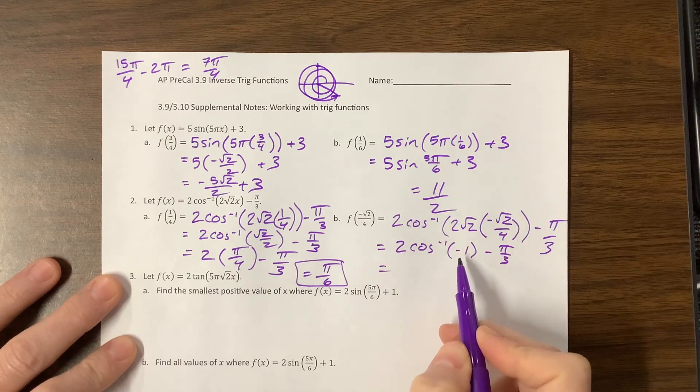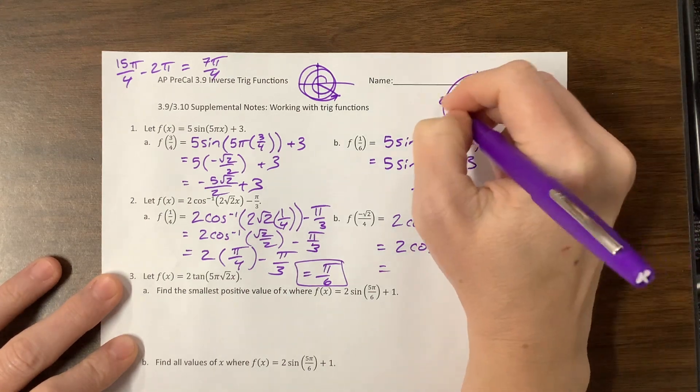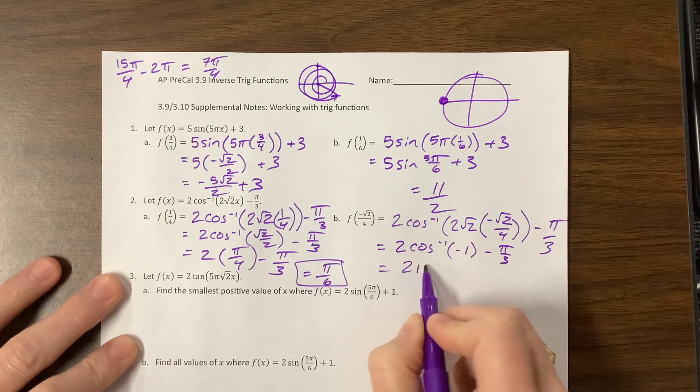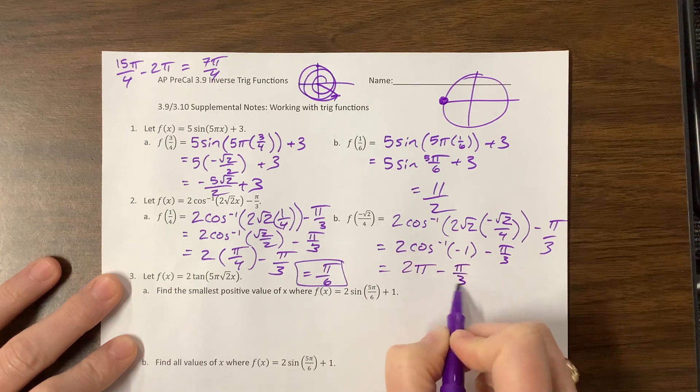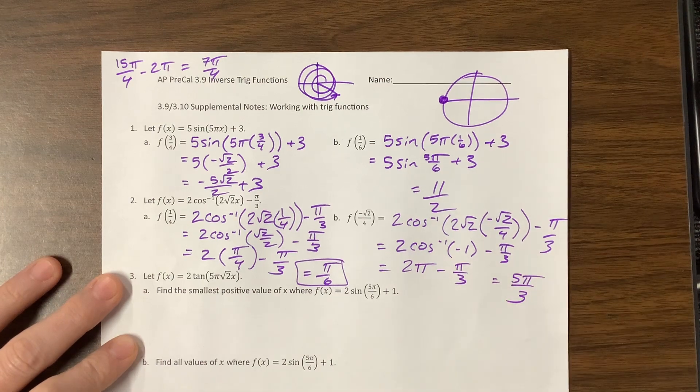Inverse cosine of -1, if I think unit circle, is π. So this is 2π minus π/3, which gives me 5π/3.